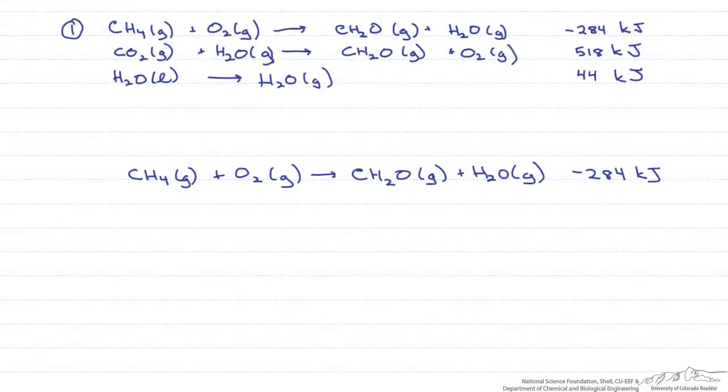However, we now have the intermediate CH2O that is not part of the reaction of interest, so we need to get rid of it. It needs to be on both the left and right side of the reaction so that it cancels out. Currently, in reaction two, CH2O is on the same side as in reaction one.